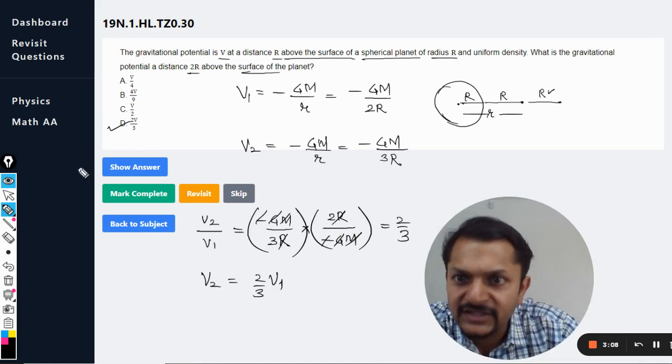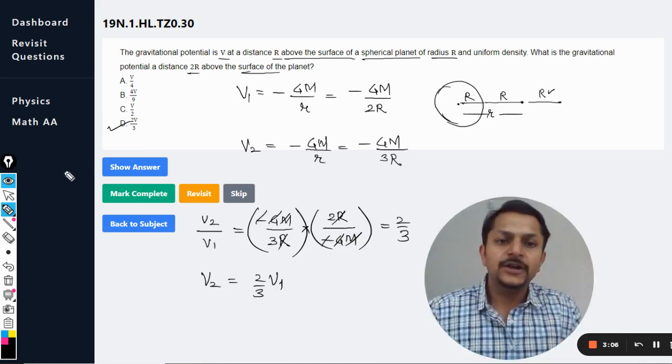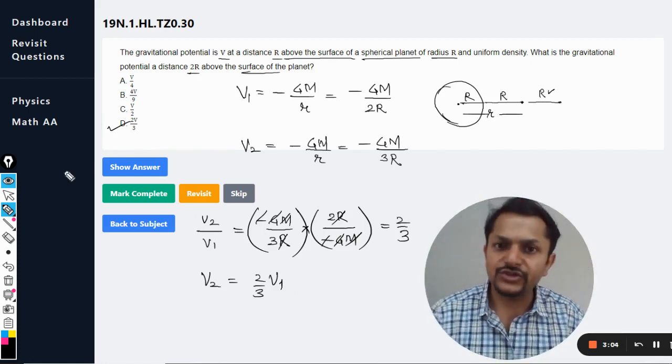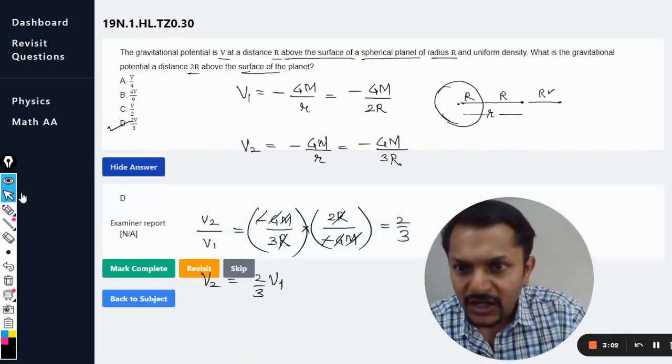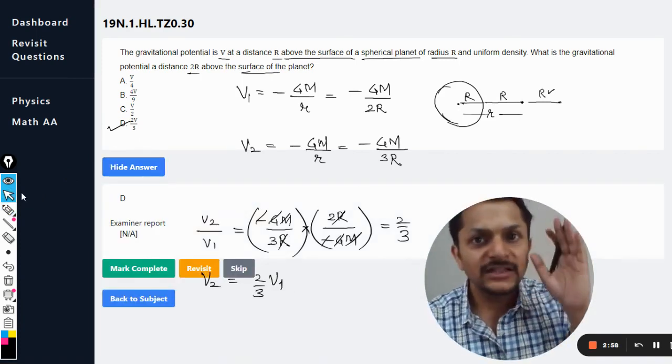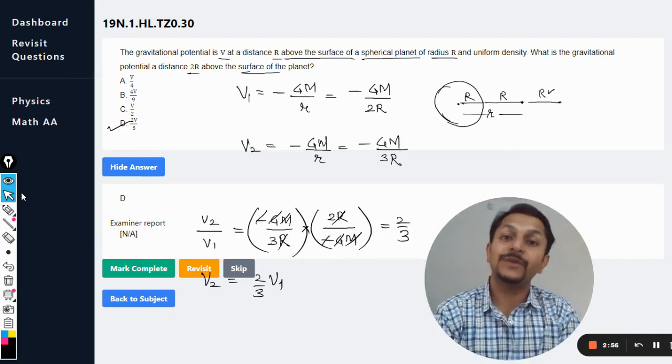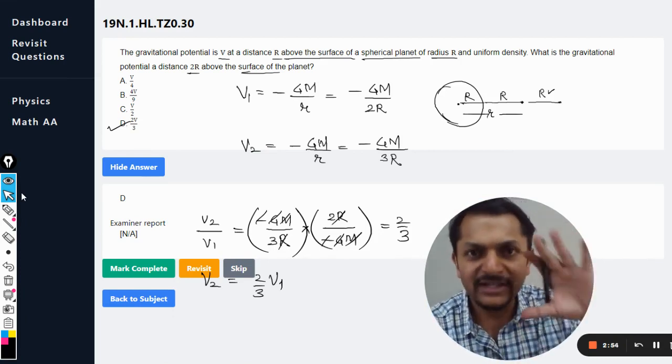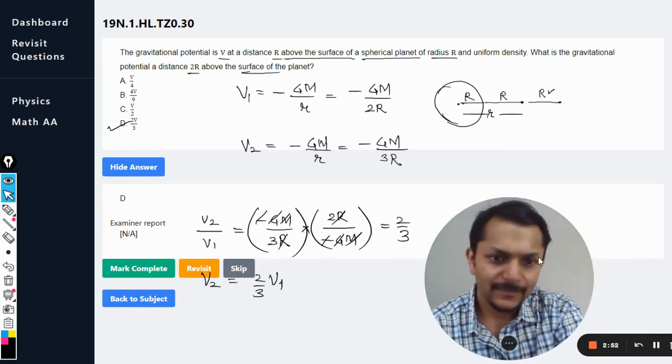So students, this is how we do this question. The potential is always negative. Let us see the answer, and yes, the answer according to the mark scheme is D. This is Professor, please subscribe to the YouTube channel. All the best.